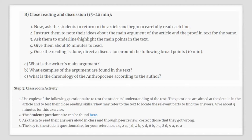Now, close reading and a discussion. Ask your students to return to the article and carefully read it. Instruct them to note their ideas about the main argument of the article and what proof is provided. Ask them to underline or highlight the main points, giving them about 10 minutes to do so. Once reading is done, direct a discussion around: What is the writer's main argument? What examples of the argument are found in the text? What is the chronology of the Anthropocene according to the author? An optional classroom questionnaire is provided to test students' close reading skills, with a key for the teacher's reference.